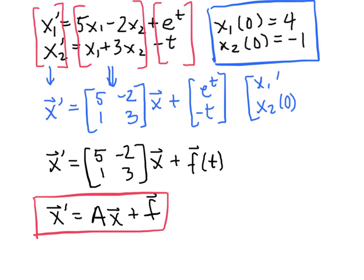So we've got x1(0) and x2(0). So that vector has to be equal to [4; -1].